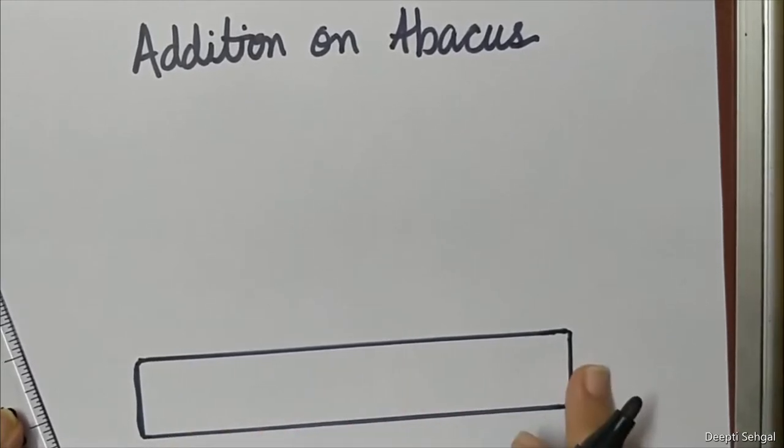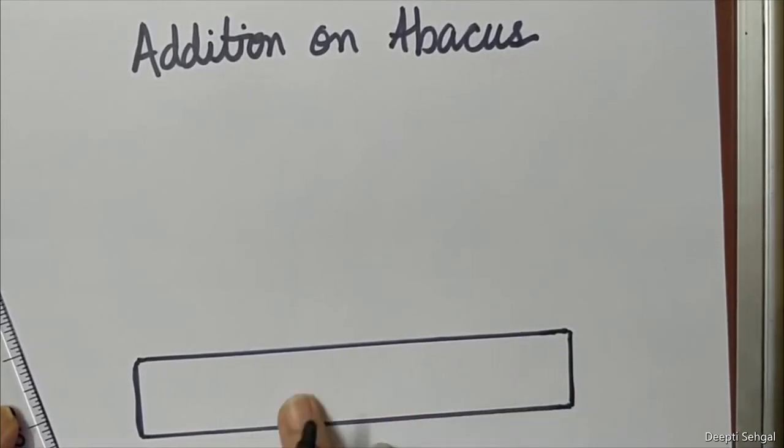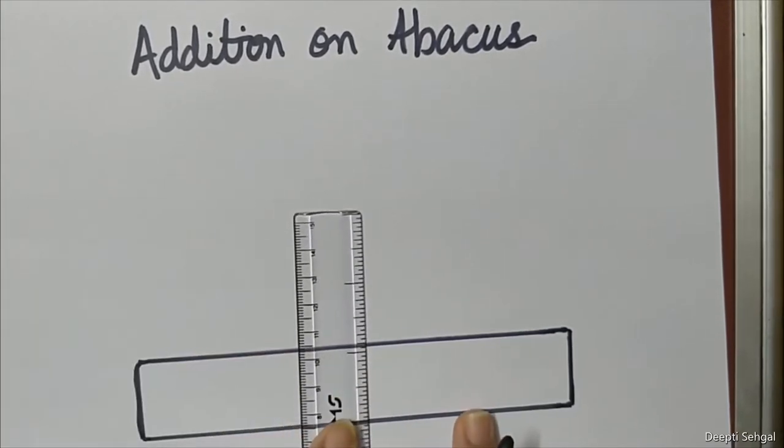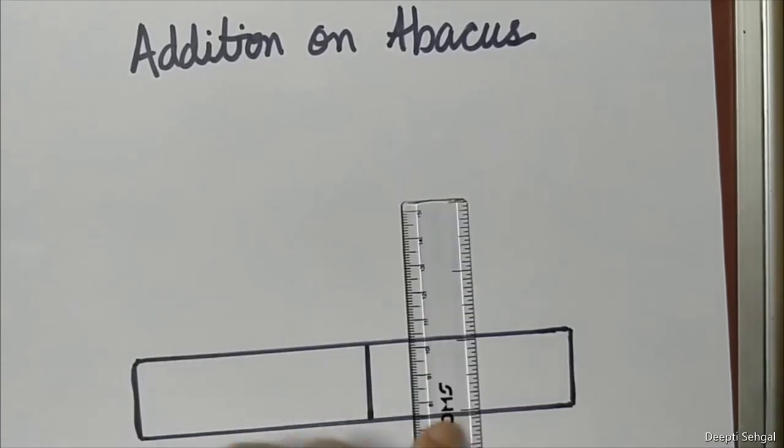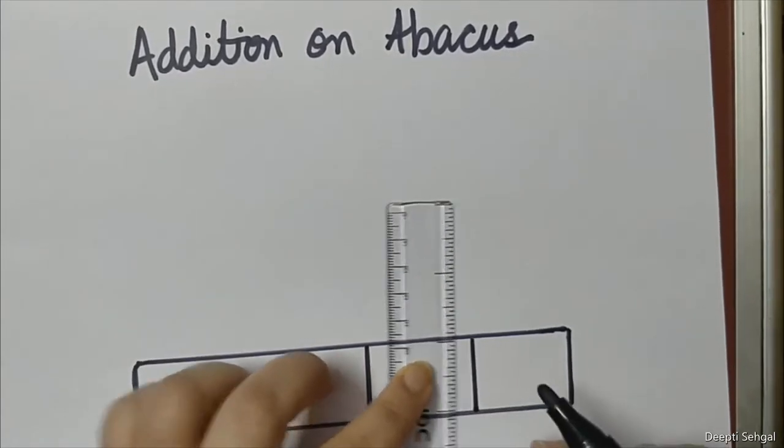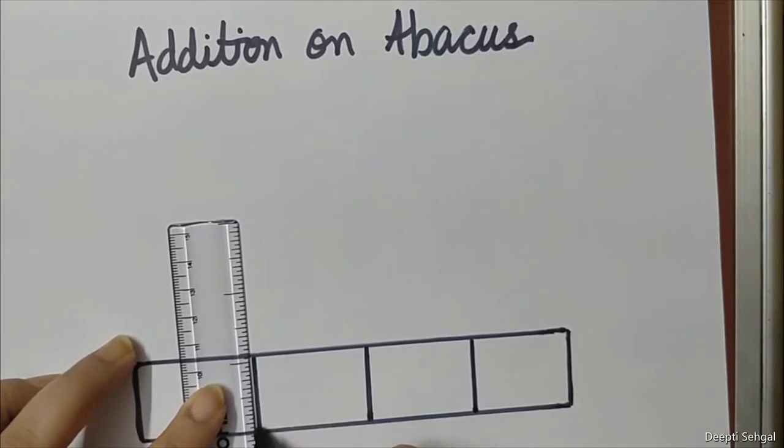I will divide this rectangle into 4 equal parts. So first I will divide it into 2 equal parts, and then I will divide this part into 2 equal parts and this part into 2 equal parts.